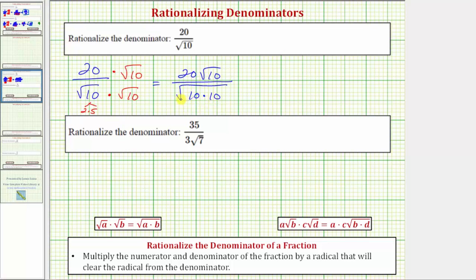And therefore this will simplify perfectly. So we have 20 square root of 10 over the square root of 10 times 10, and the square root of 10 squared simplifies perfectly to one factor of 10.